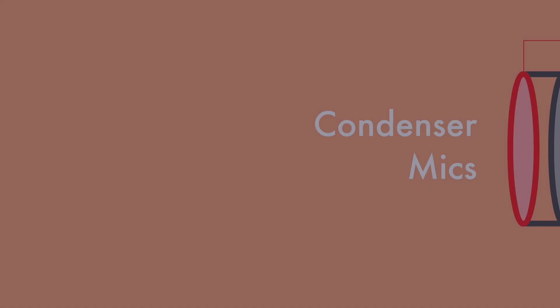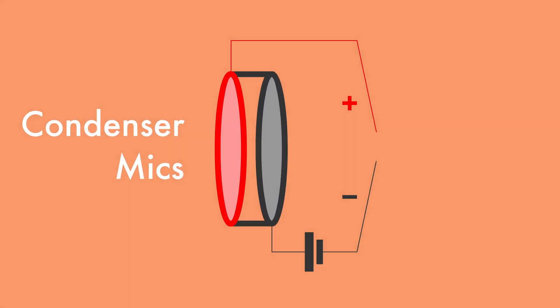Now, condenser microphones work slightly differently. Their diaphragm is a metal plate, which sits in front of another metal plate, called the back plate.